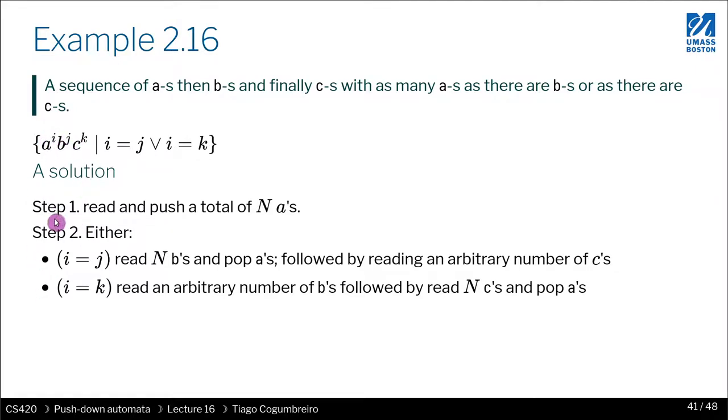Or we go nondeterministically - we could have chosen the second branch where we would just read as many b's as we want, nondeterministically leaving the stack unchanged. And then nondeterministically when we're done with b's, we go to c's and we can only read c's if we pop a's from the stack. So the stack numbers either constraint c's or constrains b's according to each of these two rules.